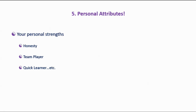Number five: personal attributes. Personal attributes means what kind of a person you are — and be very, very honest in this case. Depending on the job you are applying for, you can say you are an honest person, a team player, or a quick learner. The quick learner attribute is especially useful if you are a fresher, showing your future employer that you learn things quickly — which impresses them and helps you get the job.